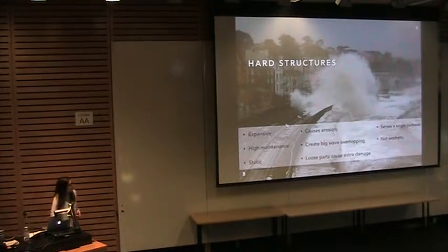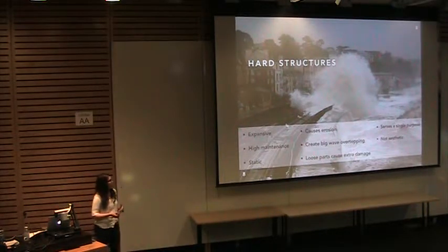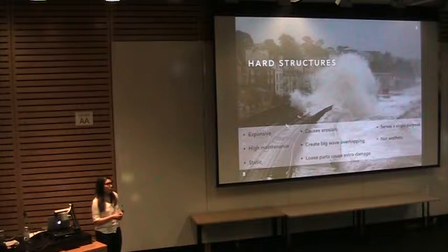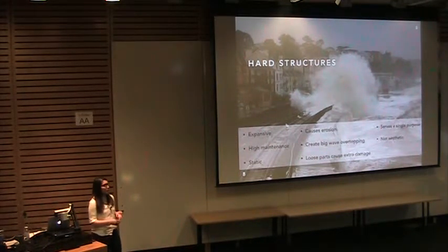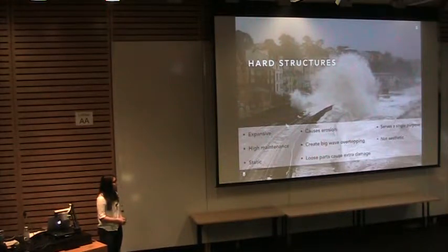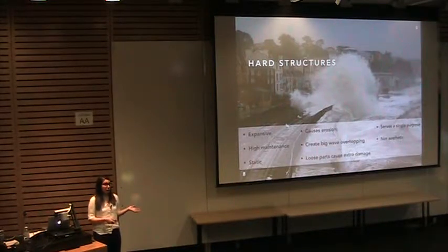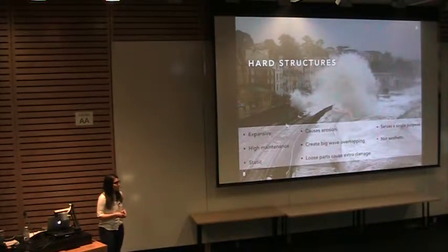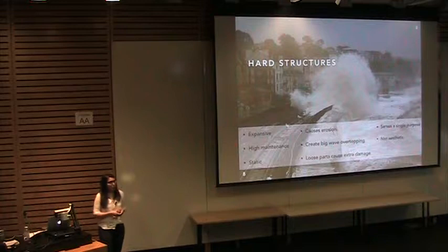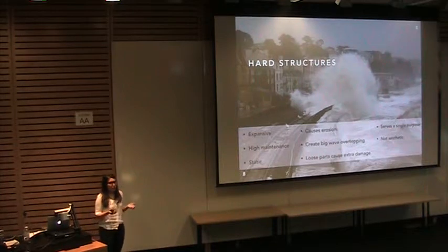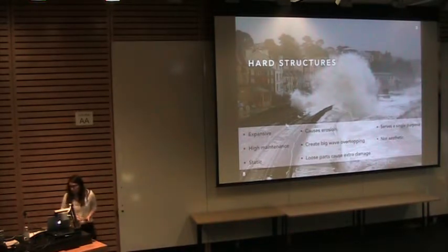Traditionally this has been done by using hard structures such as dikes and sea walls. But we now know through research and practice that these structures are very expensive to build, require really high maintenance, and are often very static — you cannot really move one to another location. They often cause erosion in other parts of the coastlines and create big wave overtoppings, which is usually the biggest part of the damage they cause, as seen in this picture. In addition, the loose parts can also cause significant damage to human lives and infrastructure, and they often serve a single purpose and tend to be not very aesthetically pleasing.